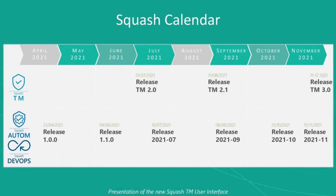Here is our release calendar. The new user interface of Squash TM was released in July with version 2.2.0, and a new version followed in August. The next major release will be version 3.0.0 in November or December 2021. The Squash Auto and DevOps modules are new — the first ones were released in April, with the next release also coming in November.